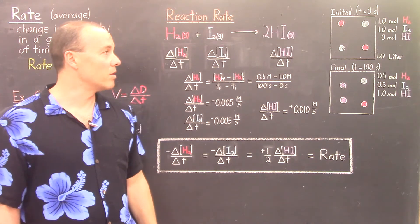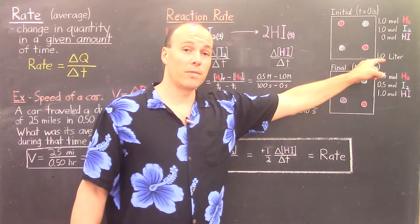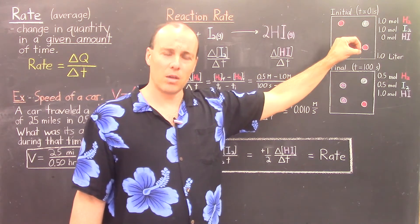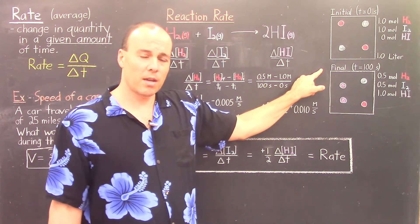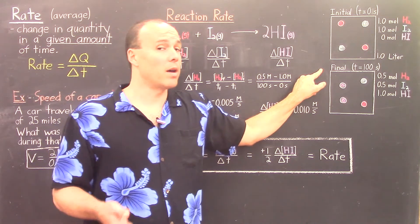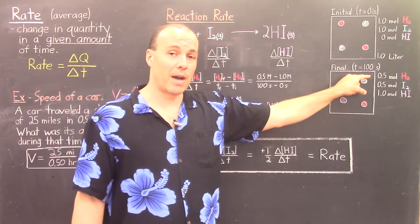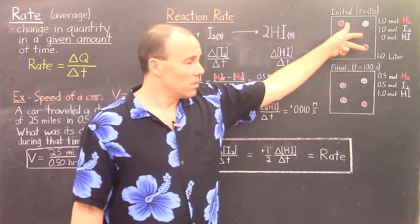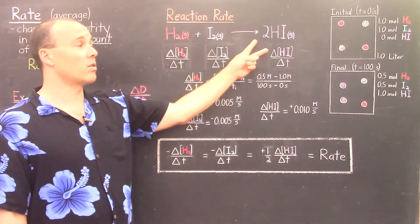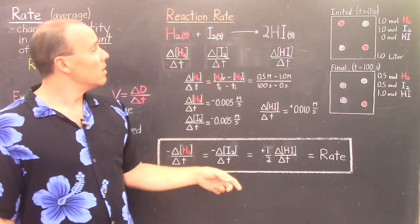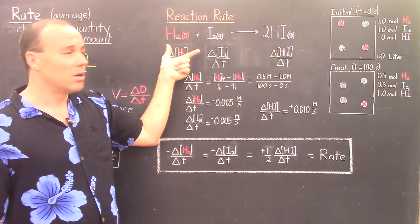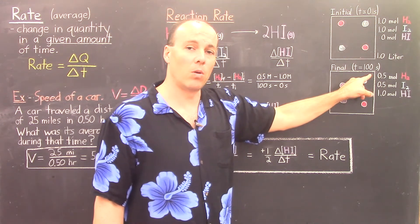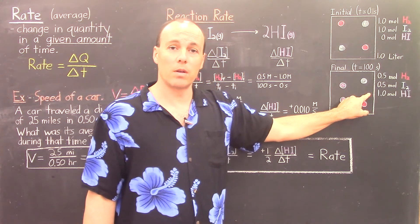Suppose we study this reaction and let it take place in a one liter vessel. At the very beginning we introduce one mole of hydrogen, one mole of iodine, and zero product, and we let the reaction proceed. After 100 seconds, some reactants have disappeared and some product has appeared — we end up with 0.5 moles of hydrogen, and also of iodine, and one mole of product HI. These numbers make sense with the stoichiometry: because of the coefficients 1, 1, and 2, if we lose a certain amount of reactant, we should gain twice that much product.